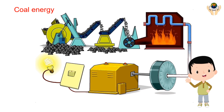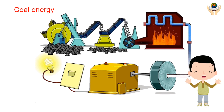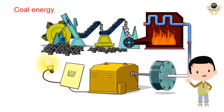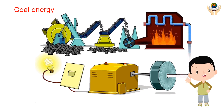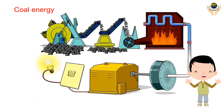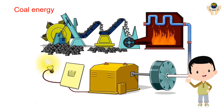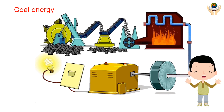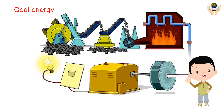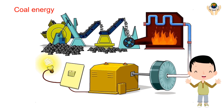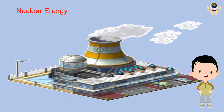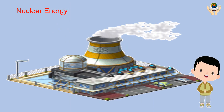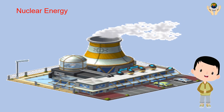Coal is one of the most important primary fossil fuels. It is a solid, carbon-rich material that is usually brown or black. Coal is burned to produce steam from water, and the steam runs the turbine, which runs the generator to produce electricity.